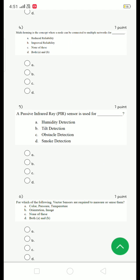Multi-homing is the concept where a node can be connected to multiple networks for. The answer is improved reliability. The answer is option B.